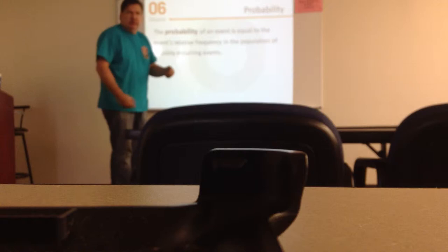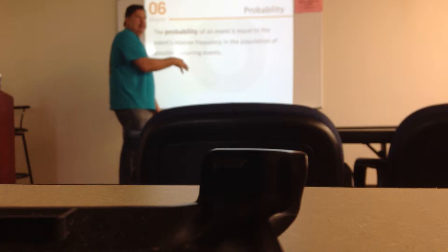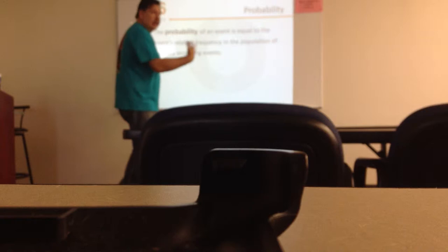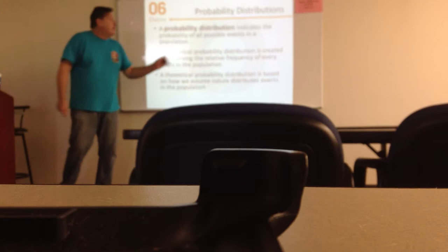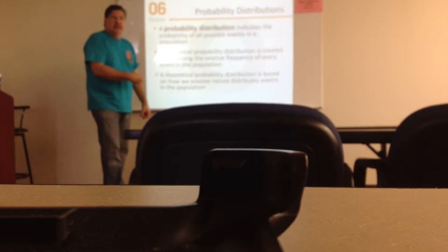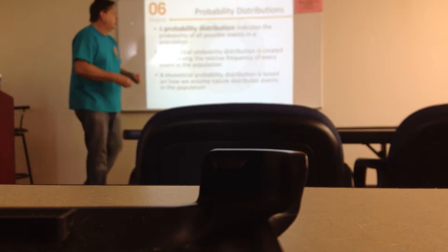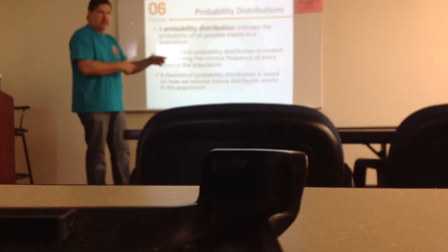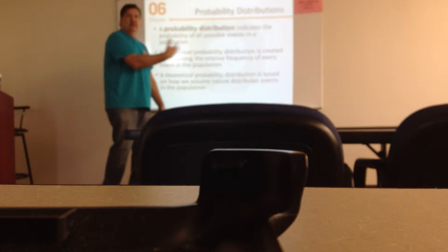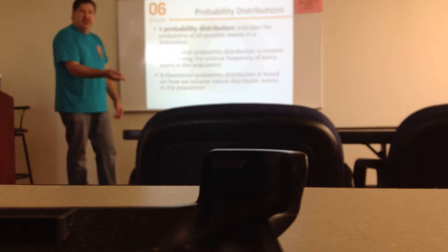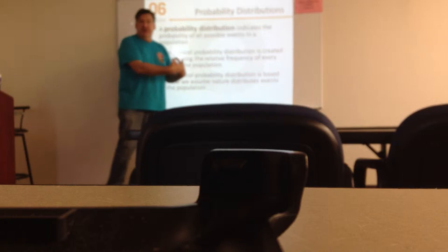The probability of an event is equal to the event's relative frequency — how relative is this going to happen, or what is the probability of this occurring in nature or our natural surroundings? A probability distribution indicates the probability of all possible events in that population or that particular variable that we're measuring. An empirical probability — the word empirical basically means scientific — is created by observing the relative frequency of every event in that particular population. The theoretical probability distribution is based on how we assume nature distributes events in a population.